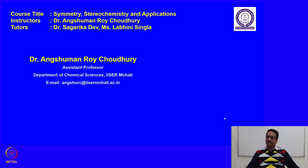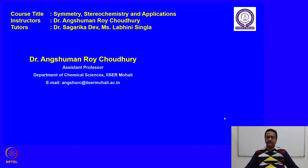In the previous couple of lectures we have discussed about the reaction mechanism involving substitution reactions and we have talked about two different reaction mechanisms, namely SN1 and SN2, and we have learned how the SN1 and SN2 mechanisms differ and what kind of alkyl halides prefer which type of reaction mechanism.